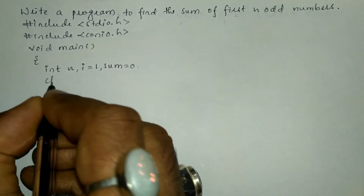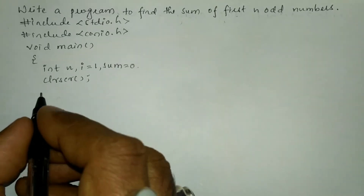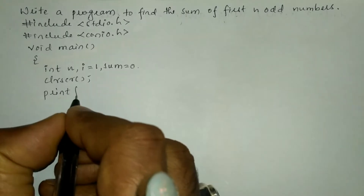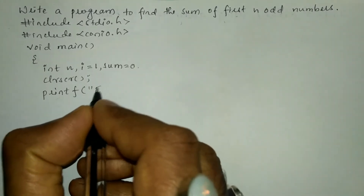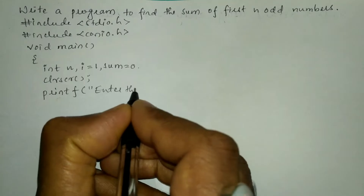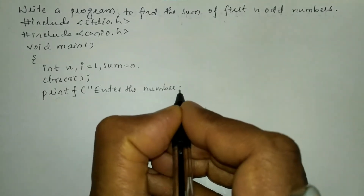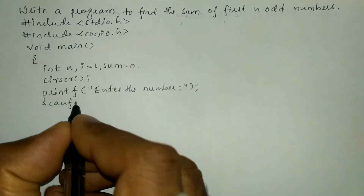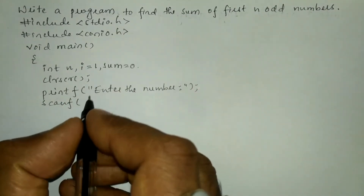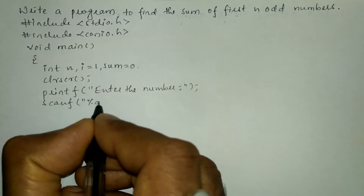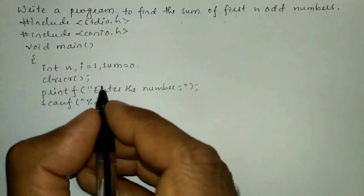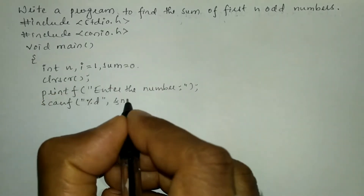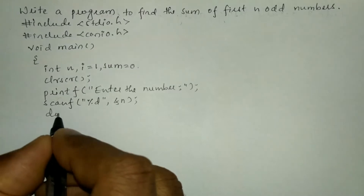Next we'll write the clrscr function, which is used to clear the screen. Now we will ask the user to enter the number using a printf statement — in double quotation marks I'm going to write 'enter the number'. Next, put semicolon and we'll use scanf to receive the input from the user through keyboard. In double quotation marks I'll write the percentage d format specifier, which indicates integer type of data, put comma ampersand of variable n, and put semicolon.